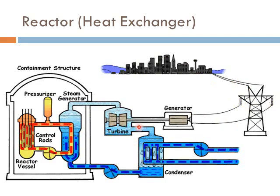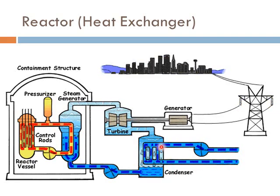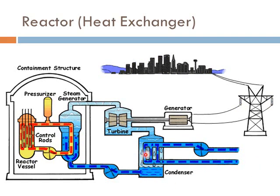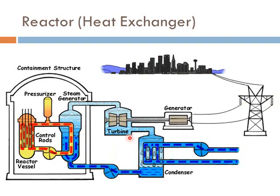Meanwhile, the used steam comes over to a condenser where cold water flowing through robs it of its heat. Nuclear generators are usually located near rivers or lakes for this purpose. The heat is dumped into the river, the water condenses, gets reheated back into steam, spins the turbine again, and the cycle continues.